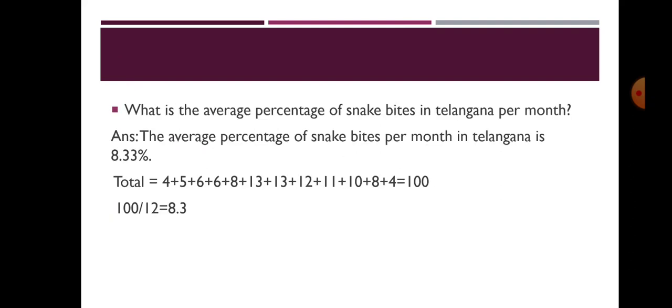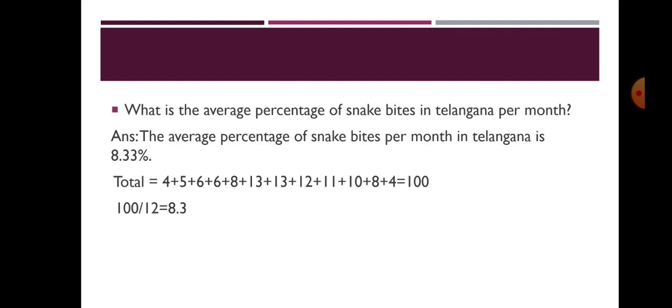What is the average percentage of snake bites in Telangana per month? To find out the average percentage, you have to sum up all the percentages of snake bites and divide by the number of months. So you add: 4 + 5 + 6 + 6 + 6 + 8 + 13 + 13 + 12 + 11 + 10 + 8 + 4.